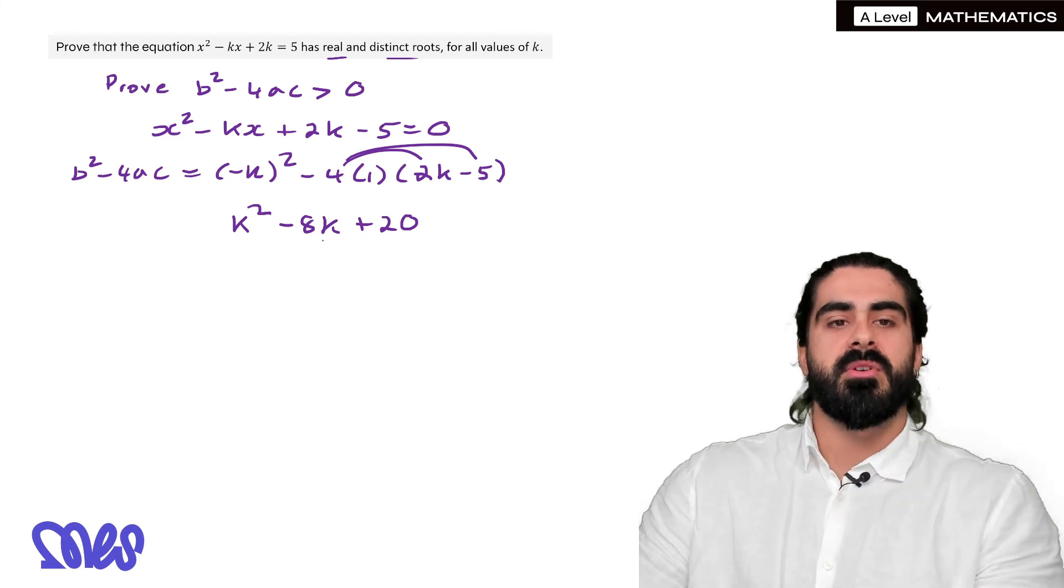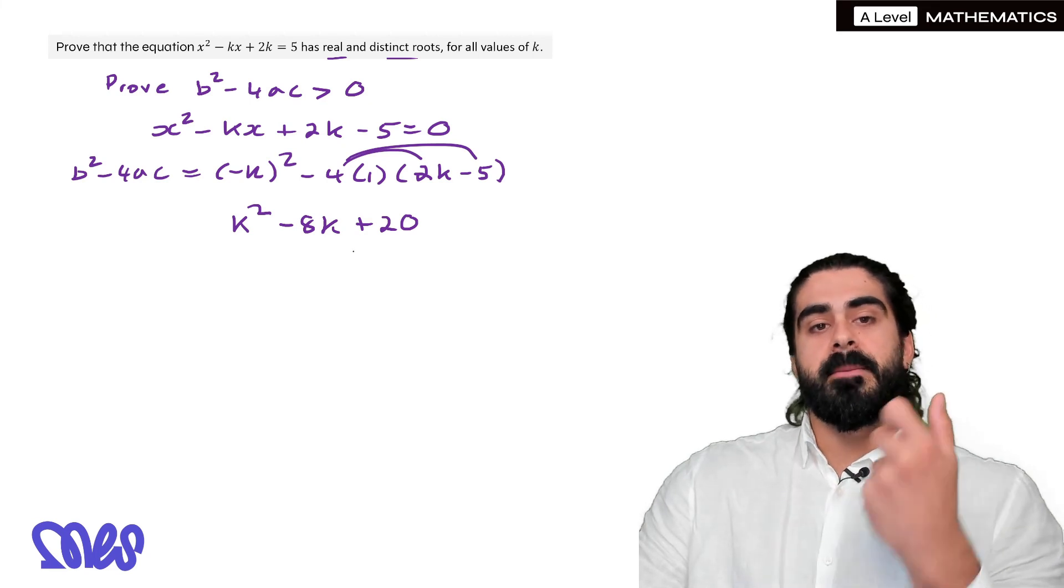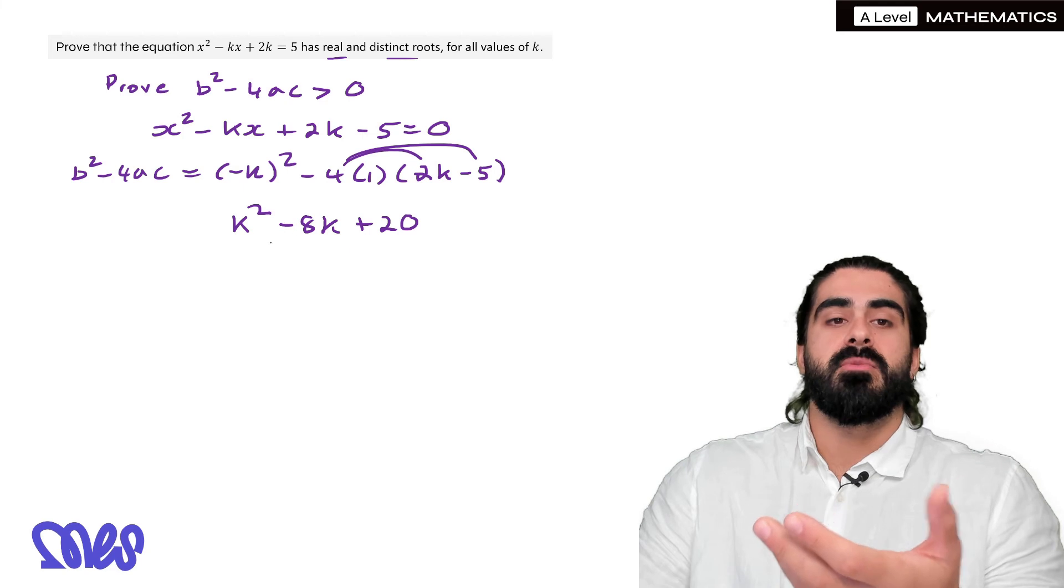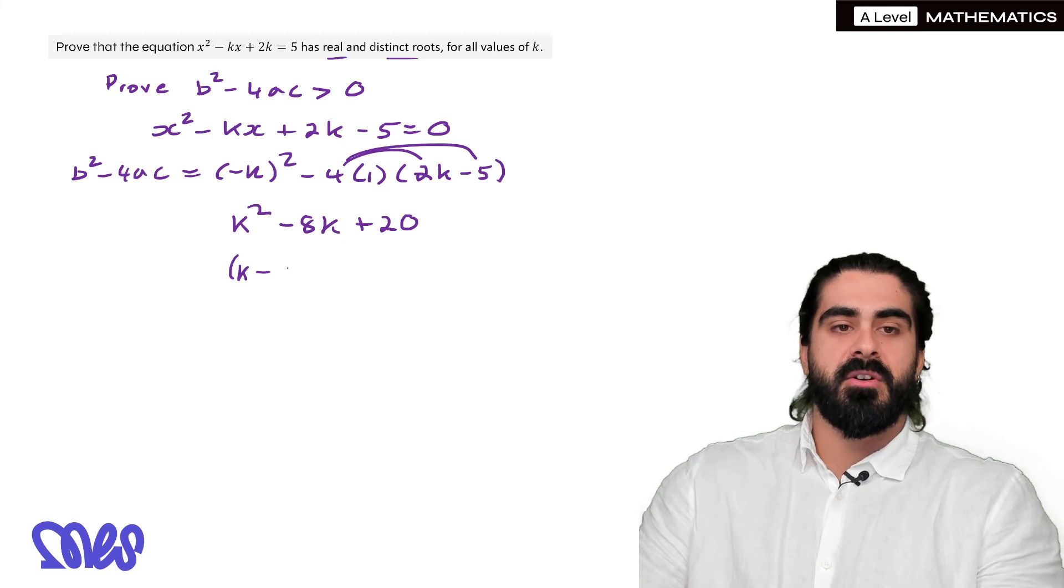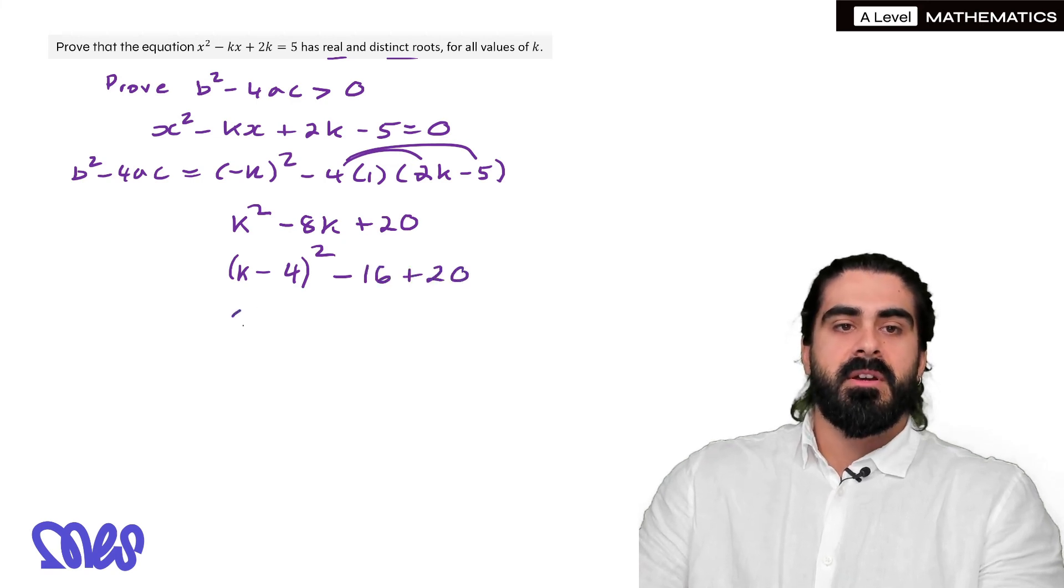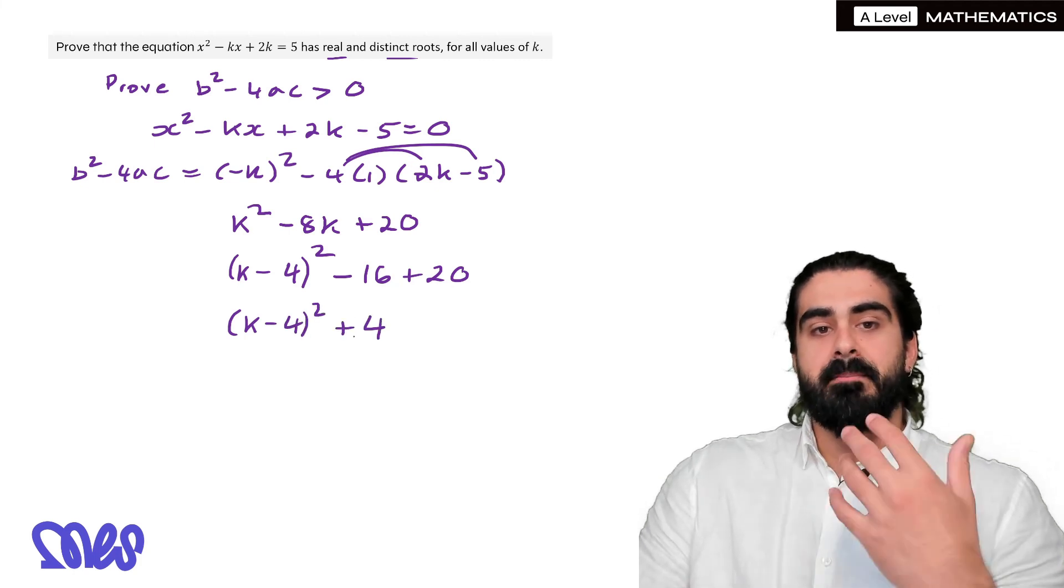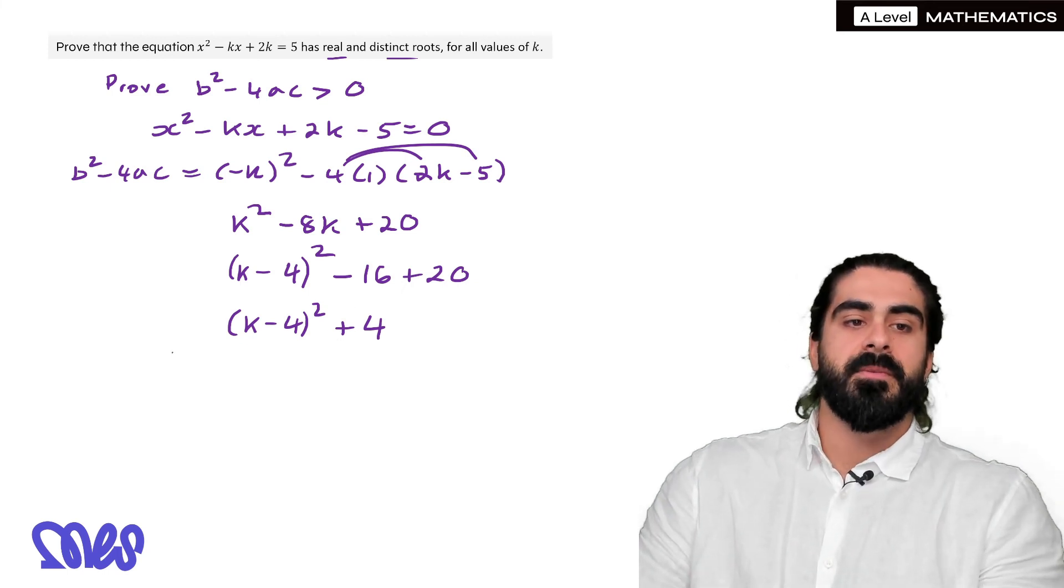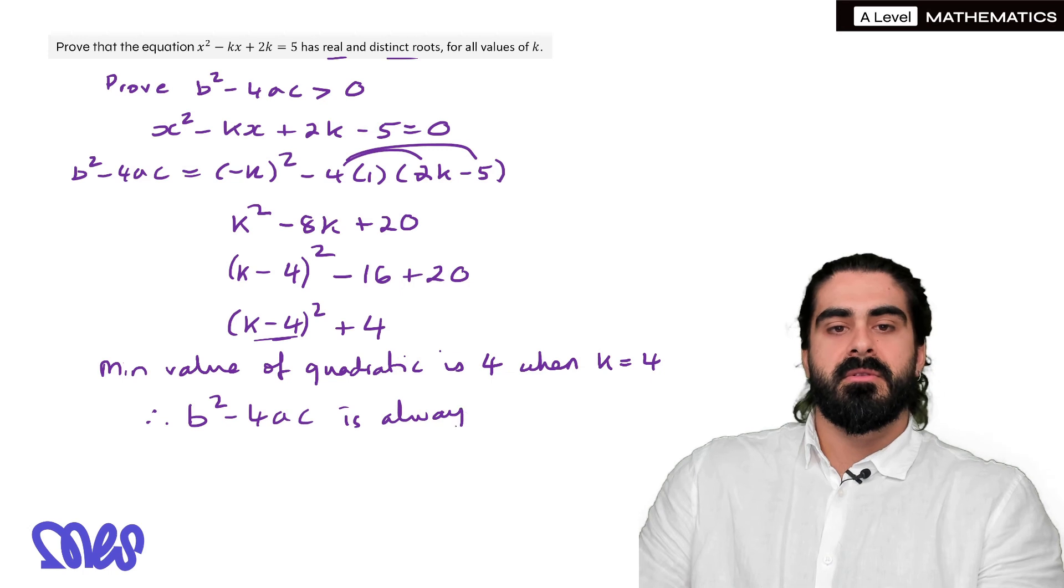Now we need to show that that is always positive. How do we show quadratics are always positive or negative etc is to complete the square. Essentially you're figuring out the turning point. It's a positive quadratic, where's its lowest point. So we're going to do k minus half the coefficient 4 squared then we subtract this number squared which is 16 and then we add 20. So we get k minus 4 squared plus 4 which means the minimum value of the quadratic is 4. Therefore b squared minus 4ac is always positive.